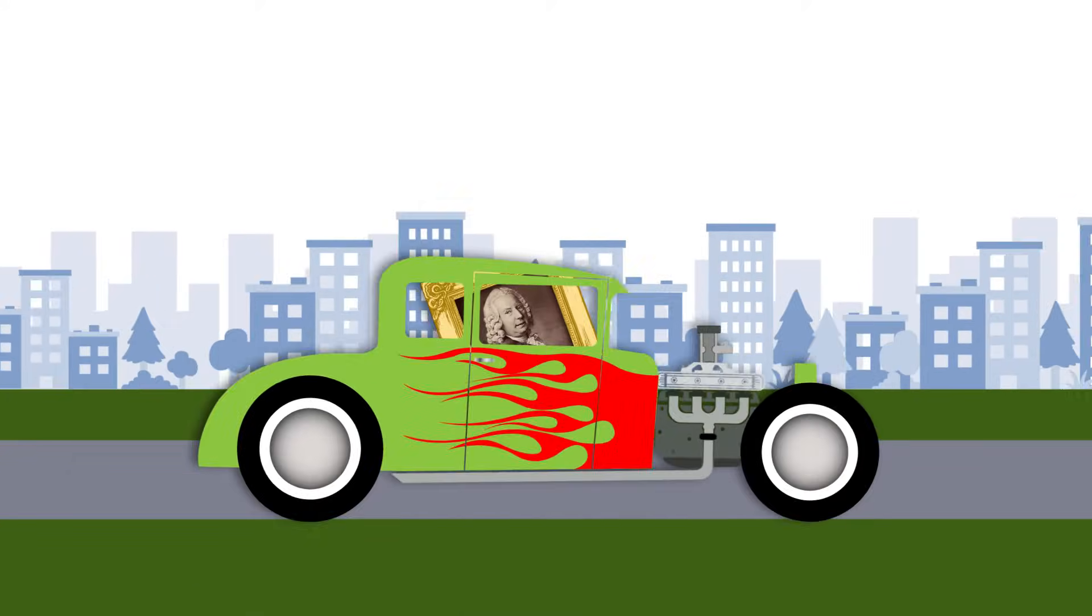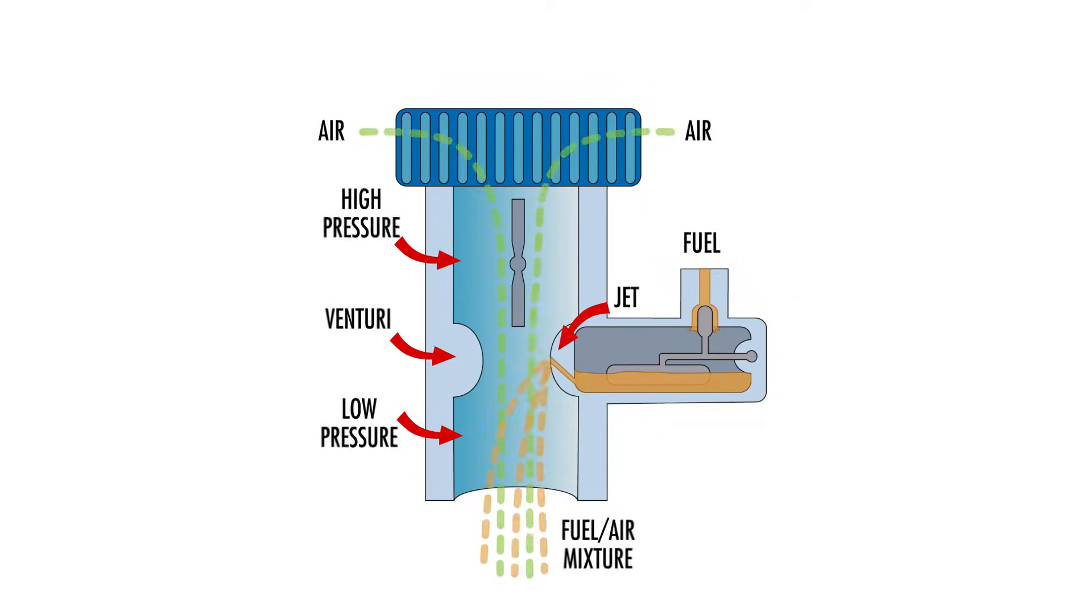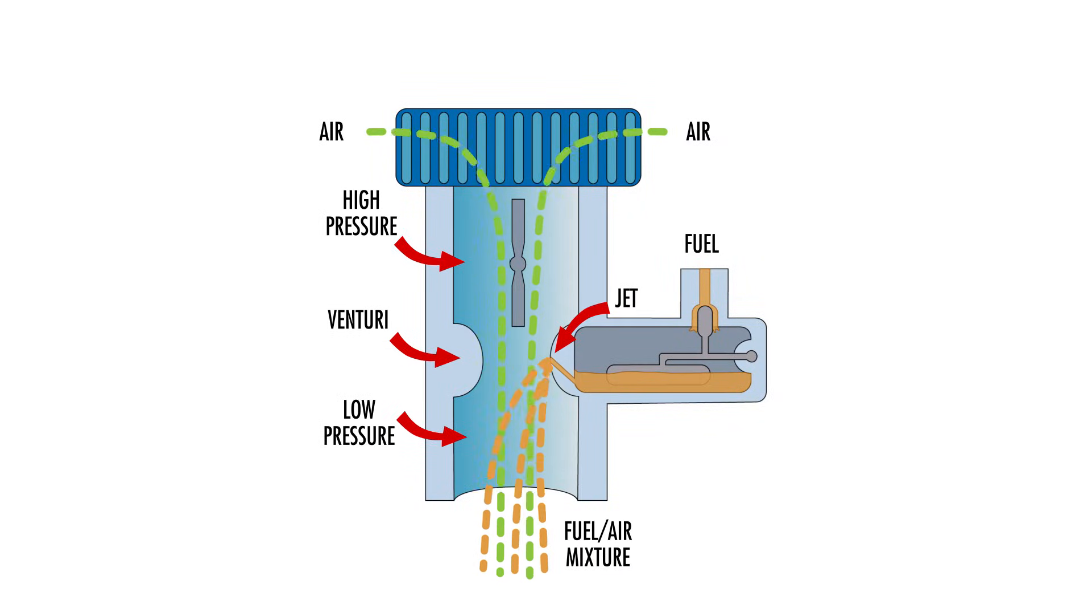We also see it in Automotive Technology, where a carburetor uses a venturi or restriction in the airflow to create a pressure differential, drawing the fuel and air into the combustion chamber at a greater velocity.